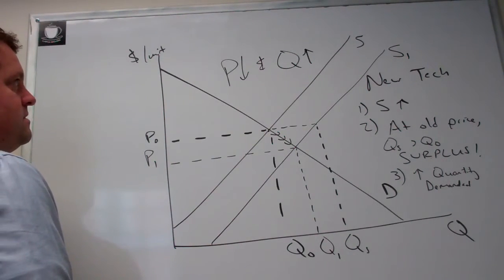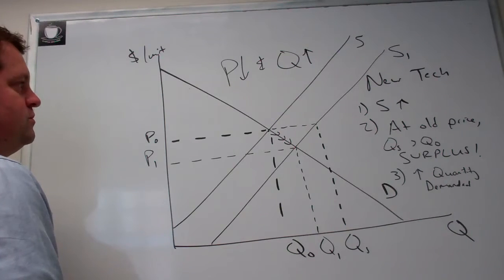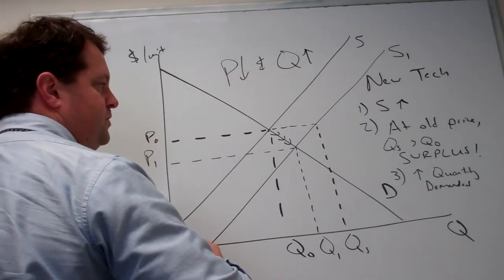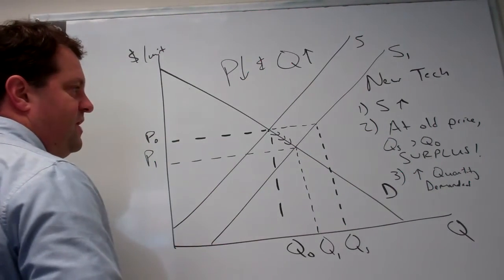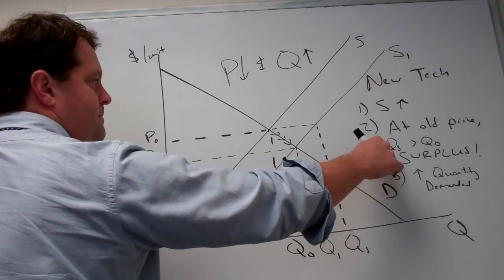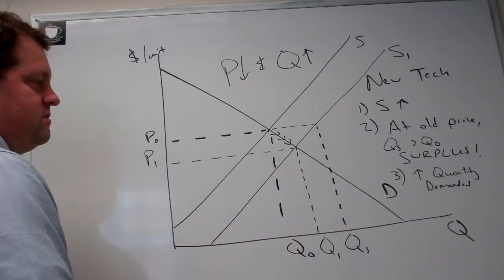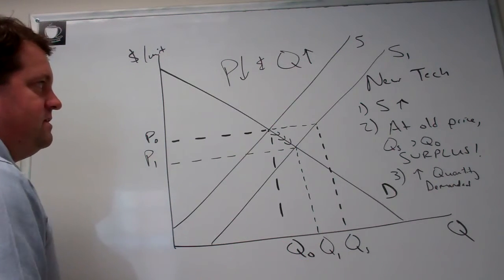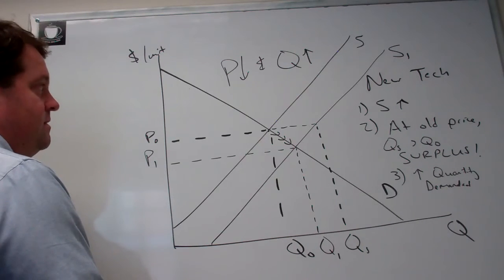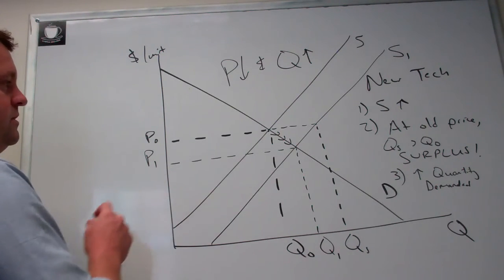And the result here is a lower price and an increase in the quantity exchanged between producers and consumers. So three steps here: find the shift, identify the surplus or shortage, and identify the movements that will occur after the price is either bid up or bid down in response to the surplus or shortage. And you've got it, you've identified what's going to happen in the market once a new equilibrium is established.